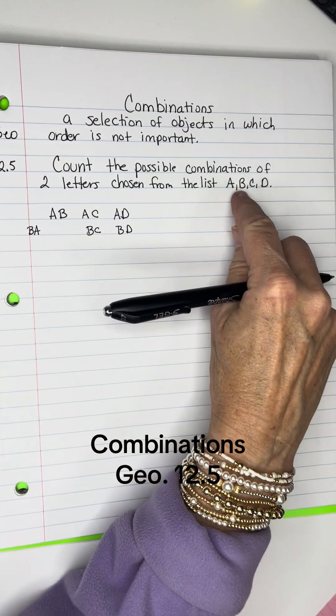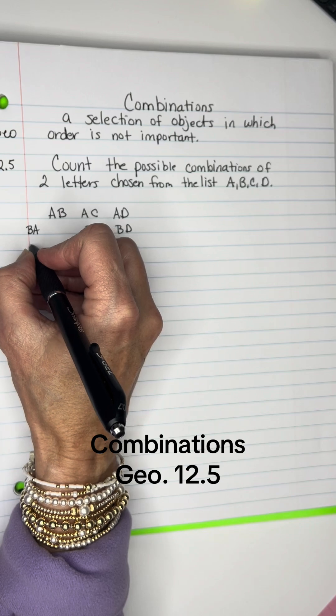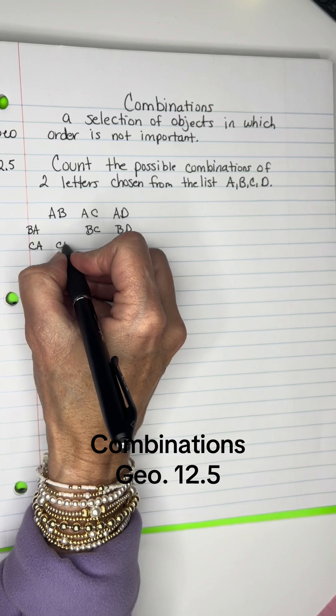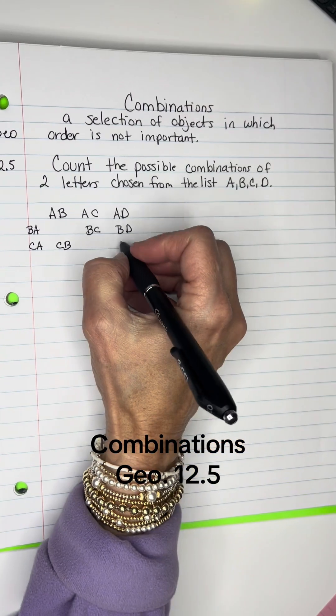So B has been placed with each one of them. I could get C with A, C with B—you can't get C with C—or C with D.